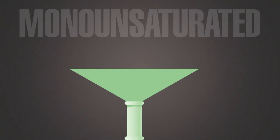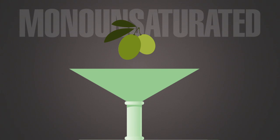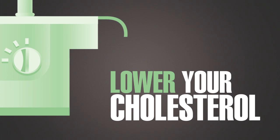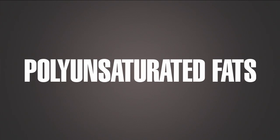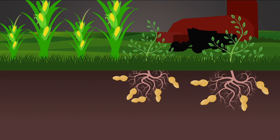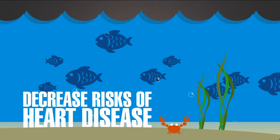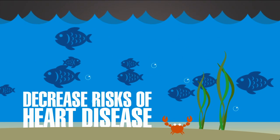But there are good fats too. Monounsaturated fats, found in avocados, nuts, and olives, lower your cholesterol levels. And polyunsaturated fats, found in corn oil, nuts, and fish, are known to decrease the risks of heart disease.